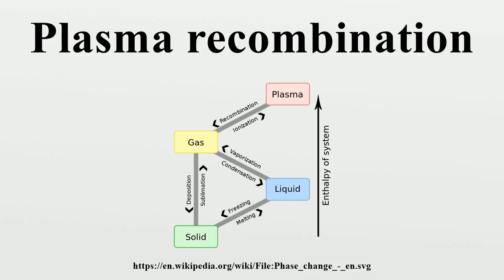Recombination usually takes place in the whole volume of a plasma, although in some cases it is confined to some special region of it. Each kind of reaction is called the recombining mode, and their individual rates are strongly affected by the properties of the plasma, such as its energy, density of each species, pressure, and temperature of the surrounding environment.